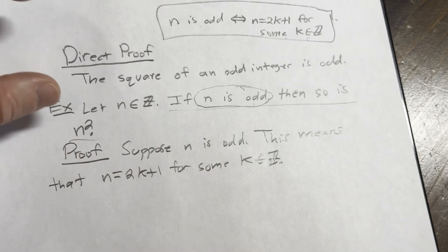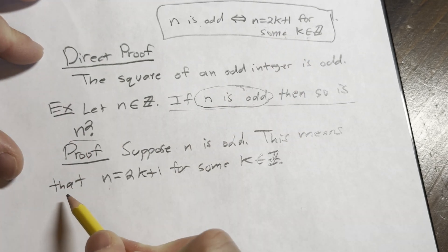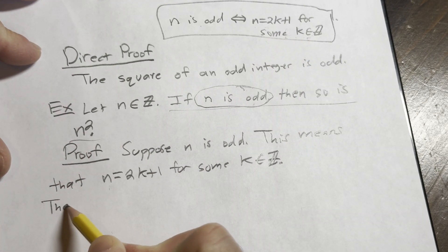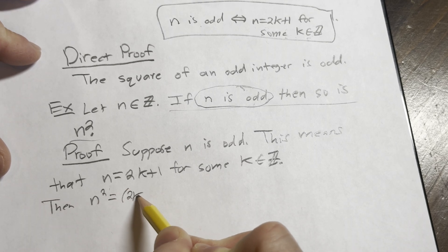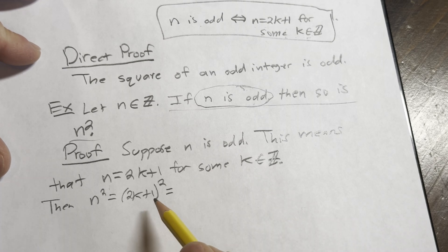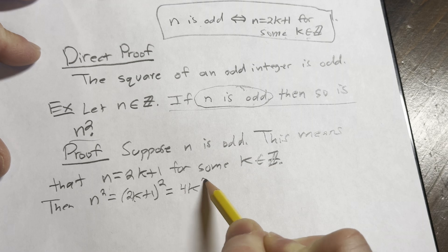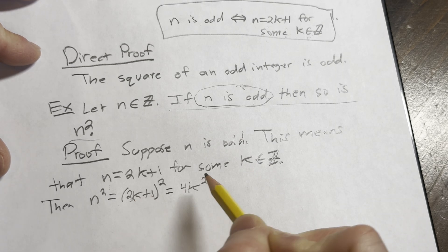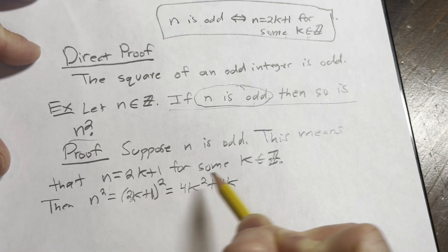So what you can do now is you just square your n and then hopefully it fits this form. So then n squared is equal to, well that's going to be 2k plus 1 quantity squared. And we can multiply this out pretty quickly. You square the first one so you get 4k squared. Multiply these and double it. That's going to give us 4k. Square the last one, that gives us 1.